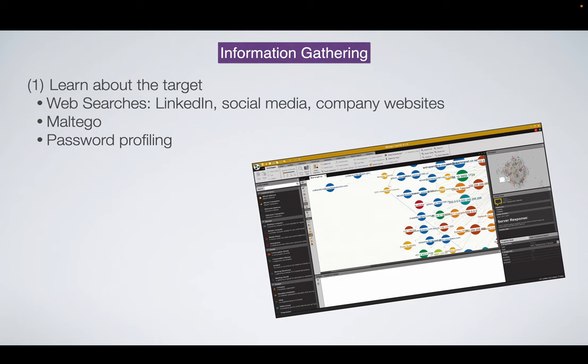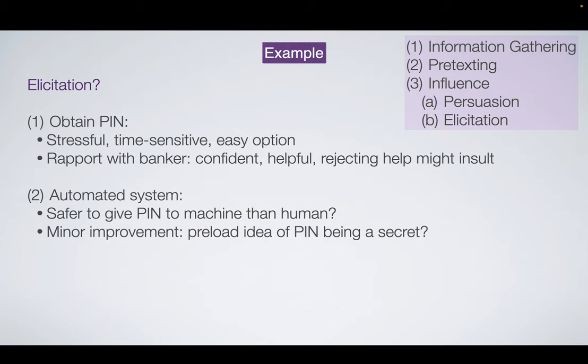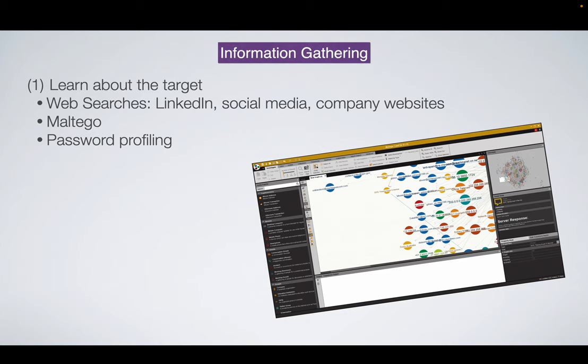Now we'll go slowly through all the framework elements — three main stages with two sub-cases — line by line. I'll give you lots of information about information gathering, pretexting, and influence. At the very end, I'll tell you a bunch of stories like the video we just saw about other social engineering attacks. The first stage that's usually present in a social engineering attack is information gathering, where the adversary wants to learn as much as they can about the target. It's usually always useful to know more.